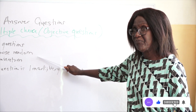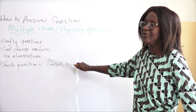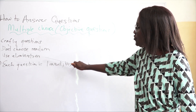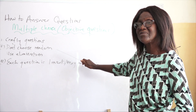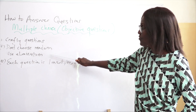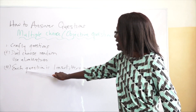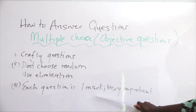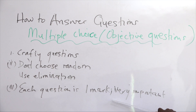If you don't know the answer, don't just choose randomly. Do elimination: if your mind is working well, you can think and eliminate the most unlikely responses and land on the right one. Remember that each question is one mark and is very important, because it is easier to make 10 marks in objective questions than to make 10 marks in theory.